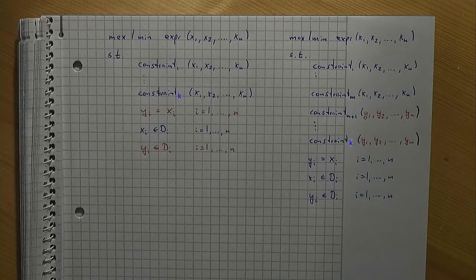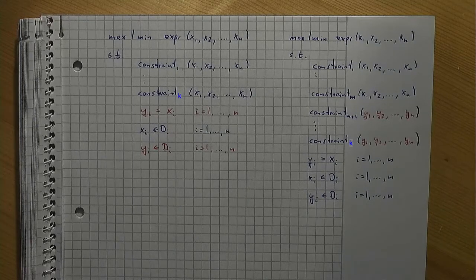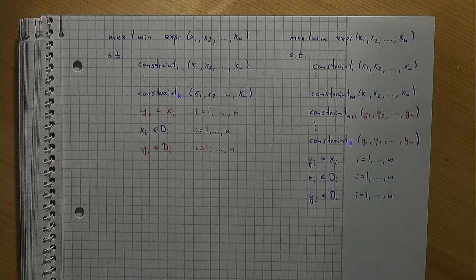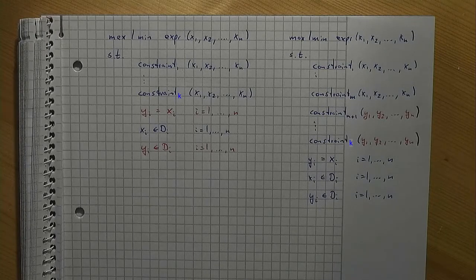Consequently, when you try to solve the Lagrangian relaxation, you can solve two models independently. This leads to a final remark: when figuring out which constraints to use with the x's and which constraints to use with the y's, it's clever to choose the names in such a way that the constraints using the x's have some nice properties, and the constraints using the y's have some nice properties too, so that solving the two independent models is possible.